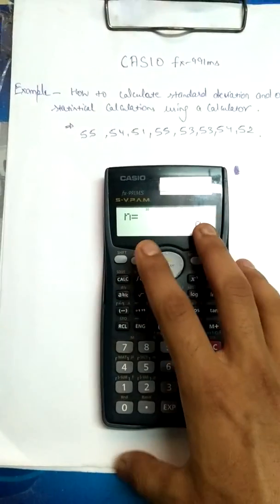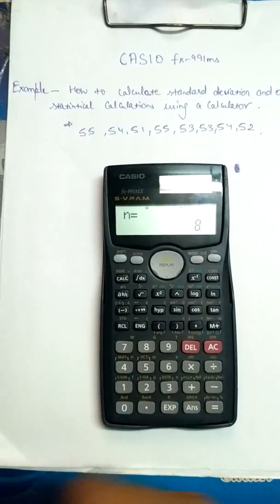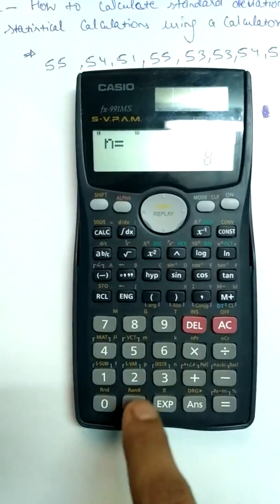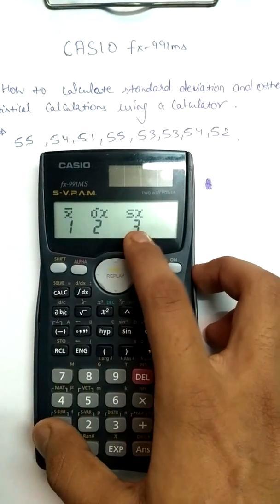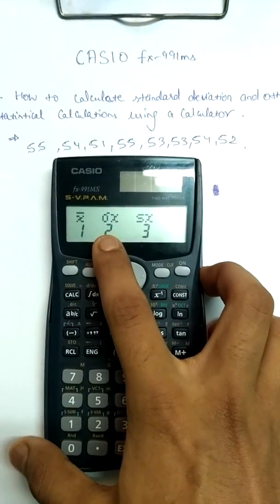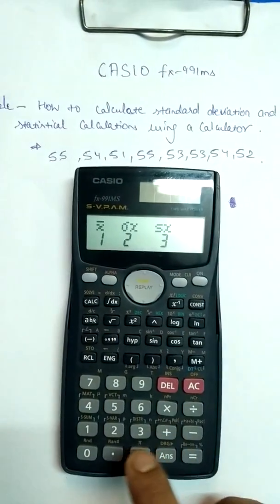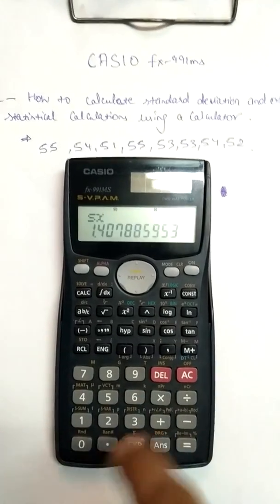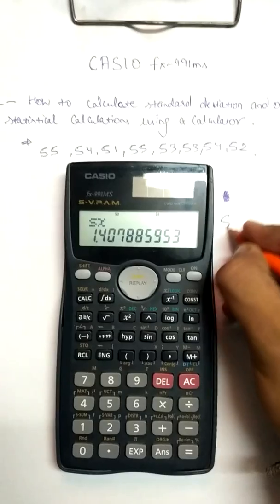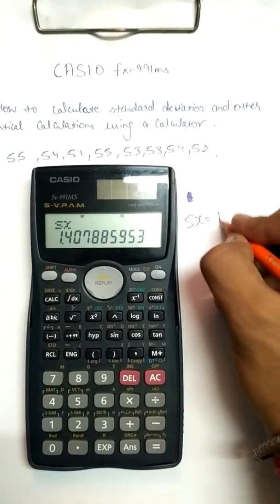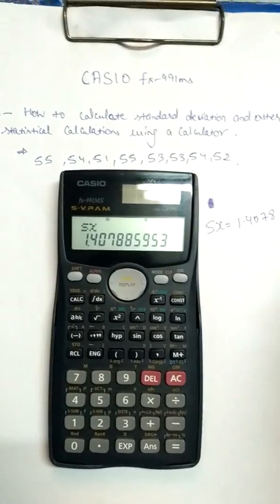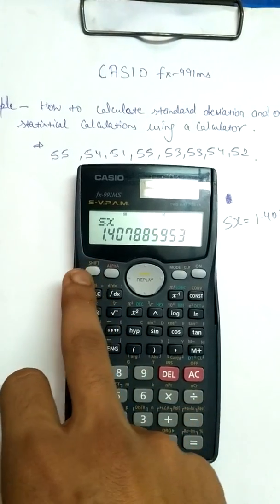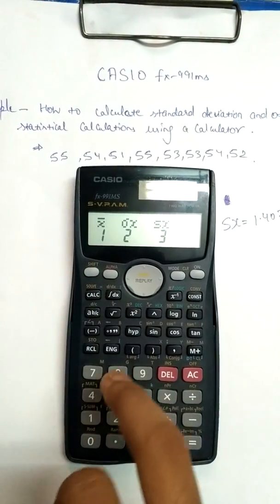Now that all data is entered, to find the standard deviation I'll press SHIFT and then 2. You can see the menu shows: population standard deviation, standard deviation, and mean. To find population standard deviation I'll press 3, and the value comes out as 1.4078. Now for the standard deviation, I press SHIFT then 2 again, and that value is 1.3169.